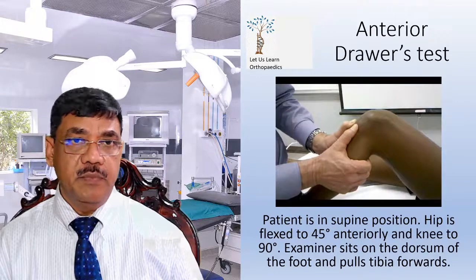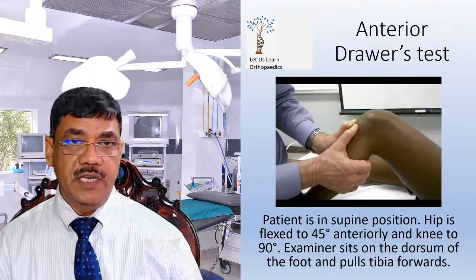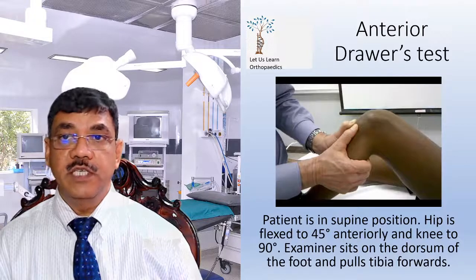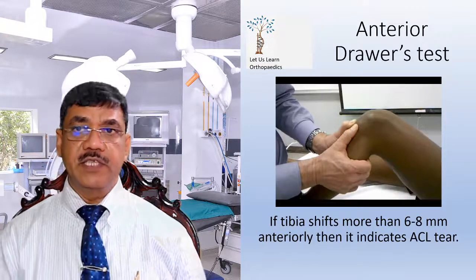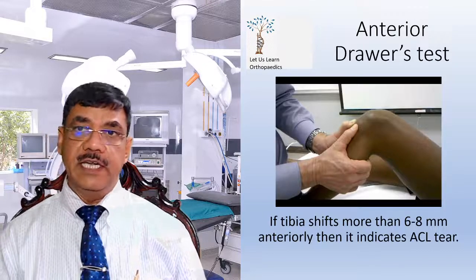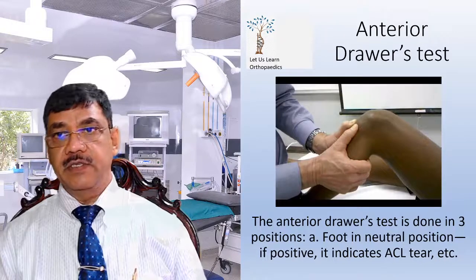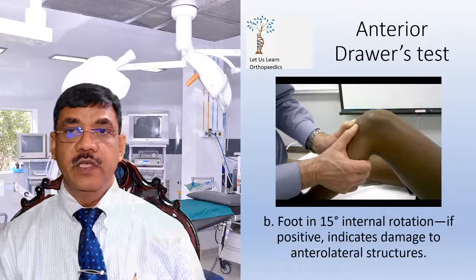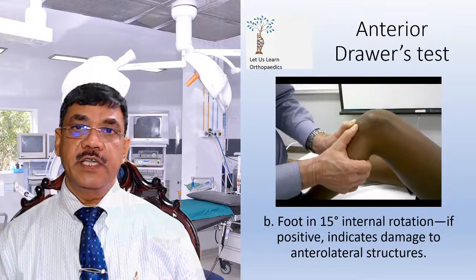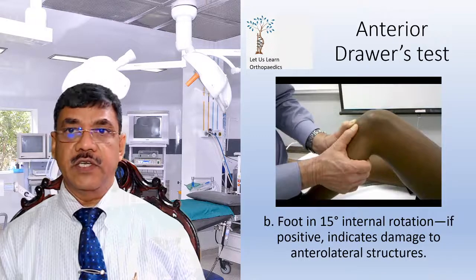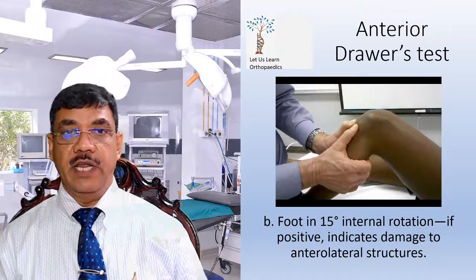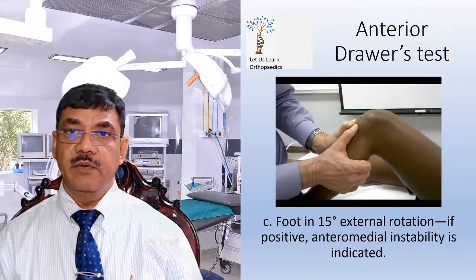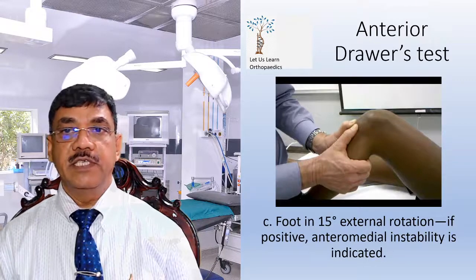The anterior drawer test is performed with the patient in supine position, hip flexed to 45 degrees and knee to 90 degrees. The examiner sits on the dorsum of the foot and pulls the tibia forward. If the tibia shifts more than 6 to 8 mm anteriorly, it indicates ACL tear. The test is done in three positions: foot in neutral — if positive, indicates ACL tear; foot in 15 degrees of internal rotation, tightening the lateral structures — if positive, indicates damage to the anterolateral structures; foot in 15 degrees of external rotation, tightening the anteromedial structures — if positive, anteromedial instability is indicated.